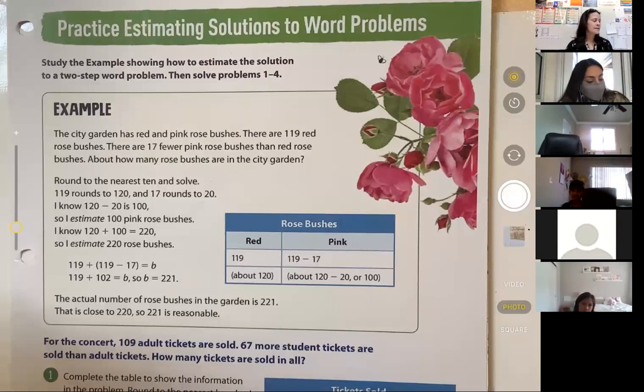I'm going to read this problem again, and this time I'm going to close read it with you. The city garden has red and pink rose bushes.